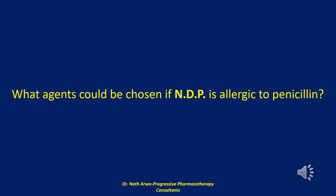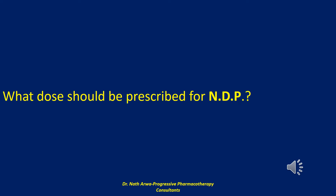Moxifloxacin and levofloxacin are potential alternatives that have the convenience of once-daily dosing. The next question reads: what dose should be prescribed for NDP? A recommended dosage of dicloxacillin is 500 mg orally every 6 hours. The dosage for penicillin V is 250 to 500 mg orally every 6 hours. For oral clindamycin, the dosage is 300 to 450 mg every 6 hours. Because dicloxacillin is the drug chosen for NDP, a dosage of 500 mg orally every 6 hours is appropriate.